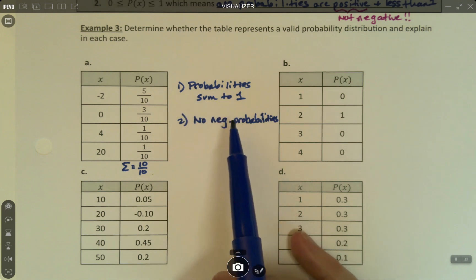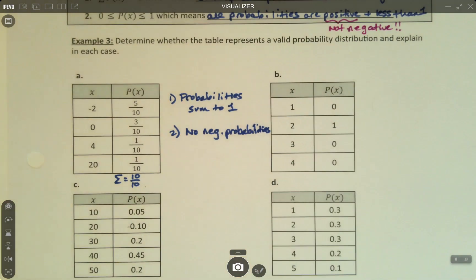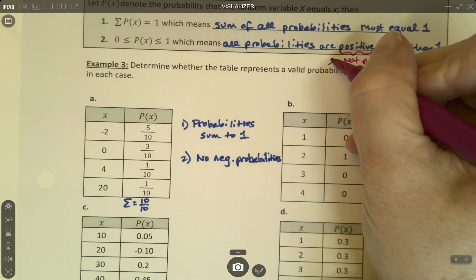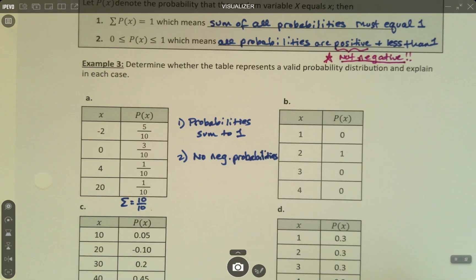If they add up to 1, then there's no way any of these are bigger than 1. That's why I just have to worry about the not negative part. That's key. So honestly, if they add up to 1, then all you've got to look for is make sure there's no negative in there.